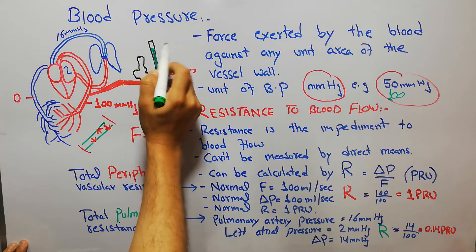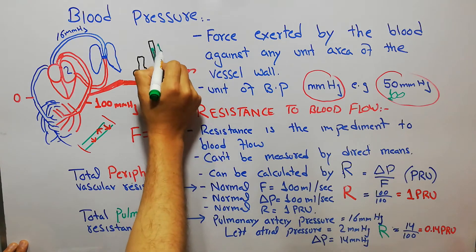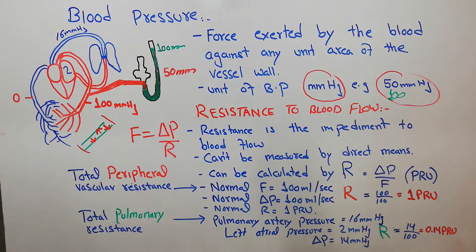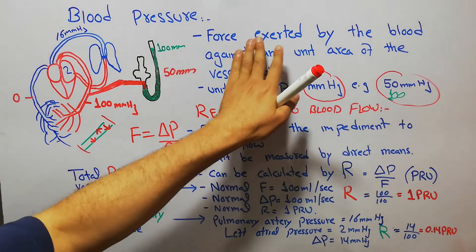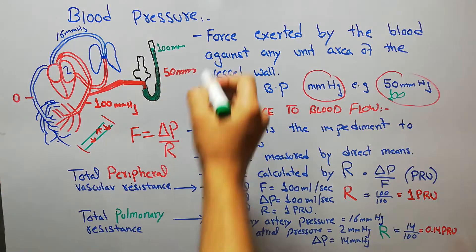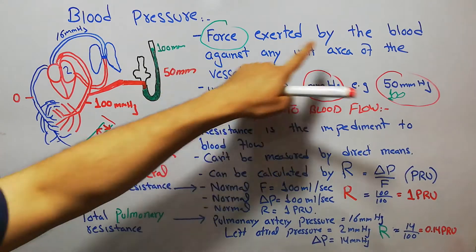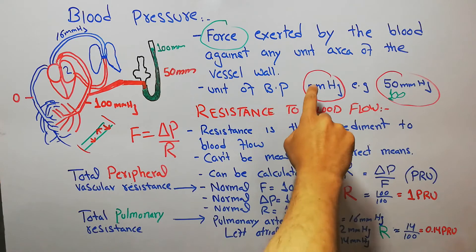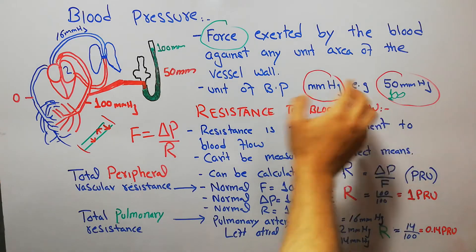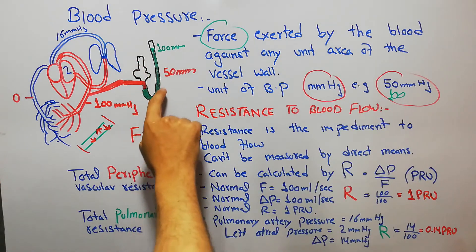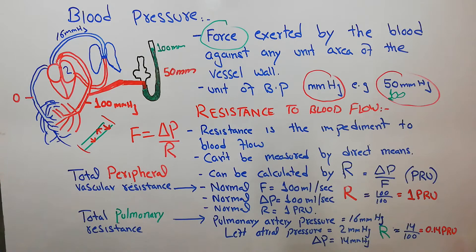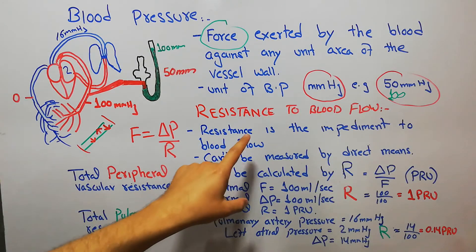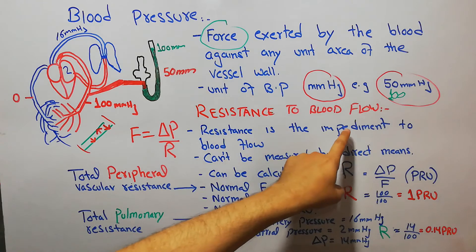So blood pressure is simply the force exerted by the blood against the wall of the vessel. Its unit is mm of mercury and it is measured with the help of a manometer. Now moving on to resistance — resistance to blood flow is basically the impediment to blood flow.